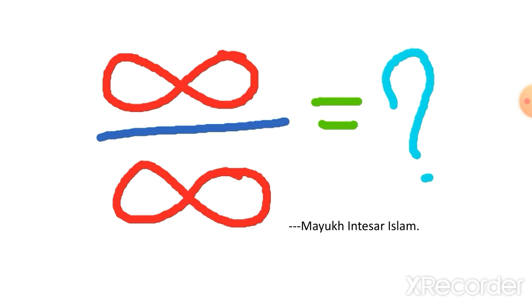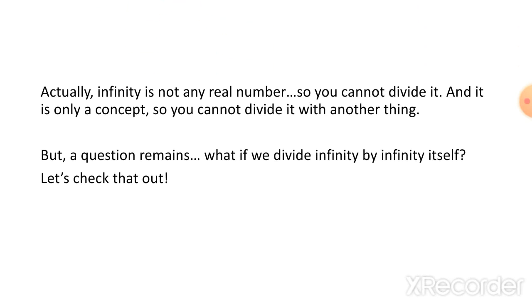We know that when you divide a number by another, it always gives us one. So our question is: what if we divide infinity by infinity? Does it also give us one? Let's check that. Actually, infinity is not a real number, it's an unreal number. And infinity is only just a concept. There is no real number like infinity.